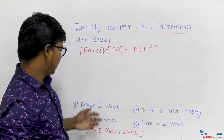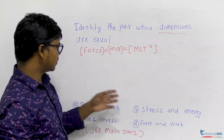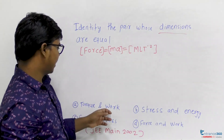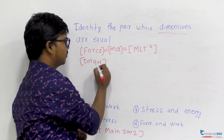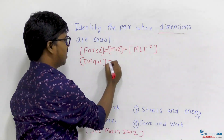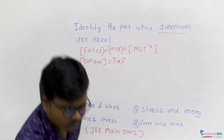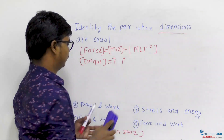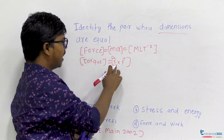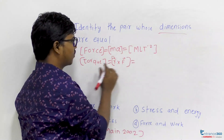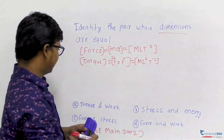We have other terms — torque, work, stress, and energy — which can all be related with force. Torque is given as R cross F, so the dimension of torque is the dimension of R cross F, which gives M L² T minus 2.